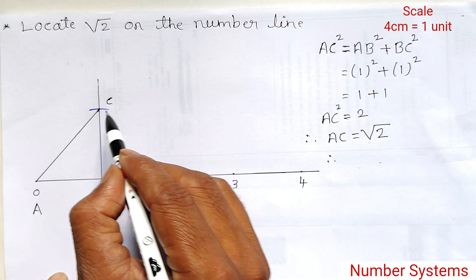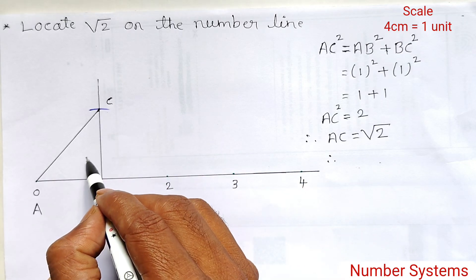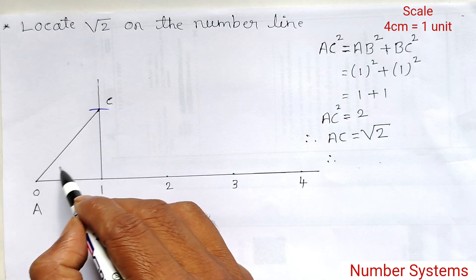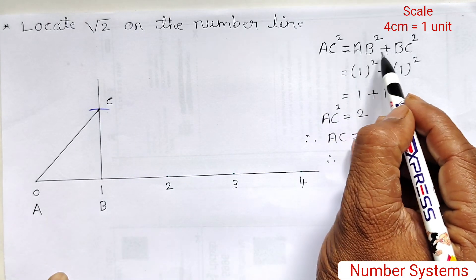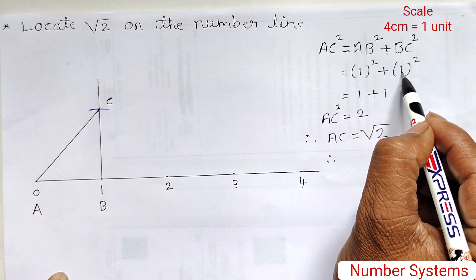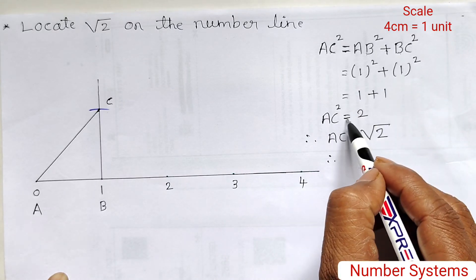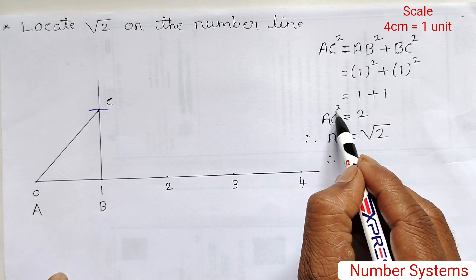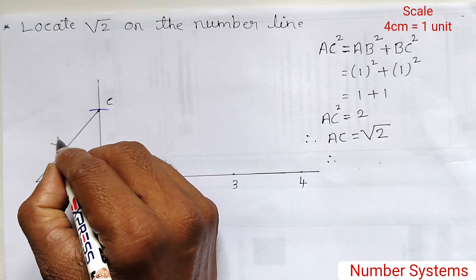Dear students, ABC is a right-angle triangle. Using the Pythagoras theorem — which states that in a right-angle triangle, the hypotenuse squared equals the sum of the squares of the other two sides — AC is the hypotenuse. Therefore, AC² = AB² + BC². AB is 1 unit and BC is also 1 unit, so AC² = 1² + 1² = 1 + 1 = 2. AC² = 2. Taking the square root of both sides, AC = √2.